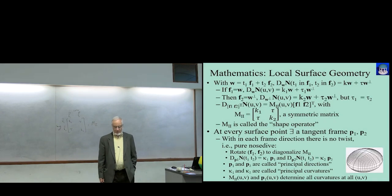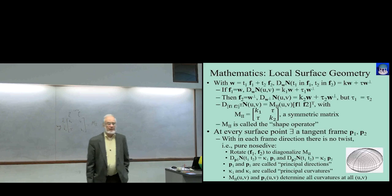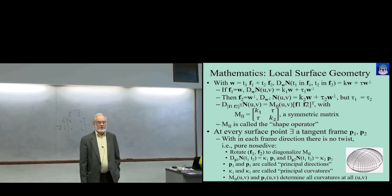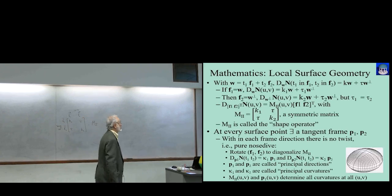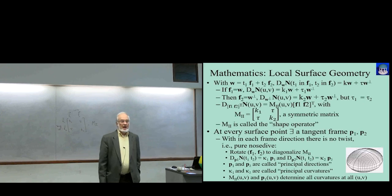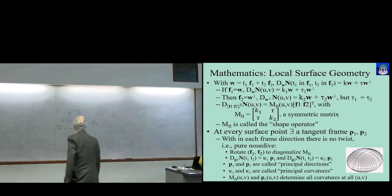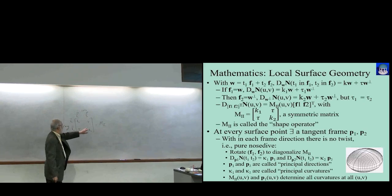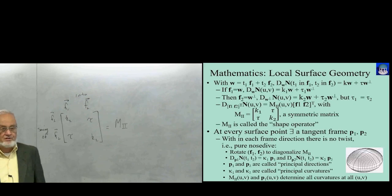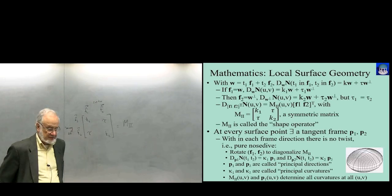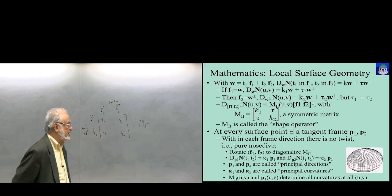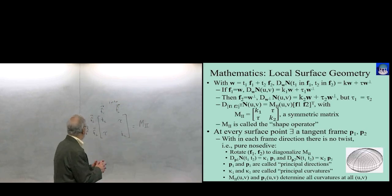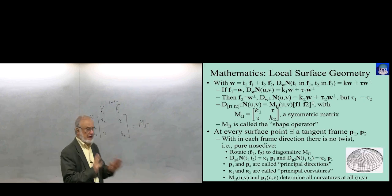We're covering some basic mathematics that is needed because we're going to be using it to create object features that we'll then do things like statistics on. We've been talking about surface geometry, and I remind you that we defined this M2 matrix, which allows you to find all curvature information in regard to the swing of the normal on a surface in any walking direction.